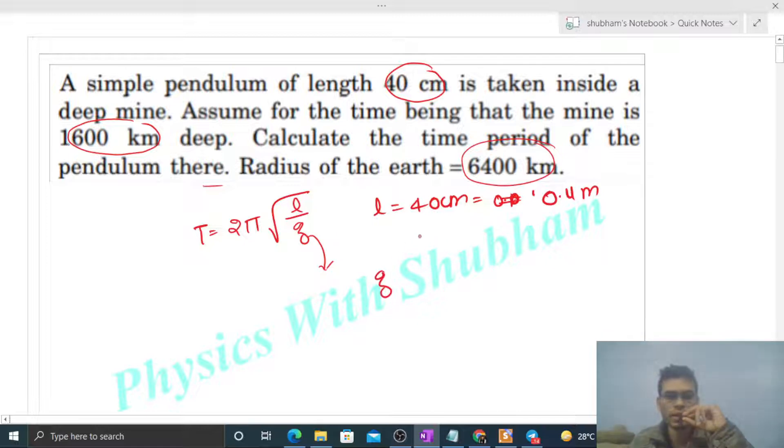So variation of g with depth inside the Earth's surface is: g at some depth d equals g at the surface of Earth times (1 minus d divided by capital R). So g on the surface of Earth is 9.8 meters per second squared times (1 minus 1600 kilometers divided by the radius of Earth, that is 6400 kilometers).